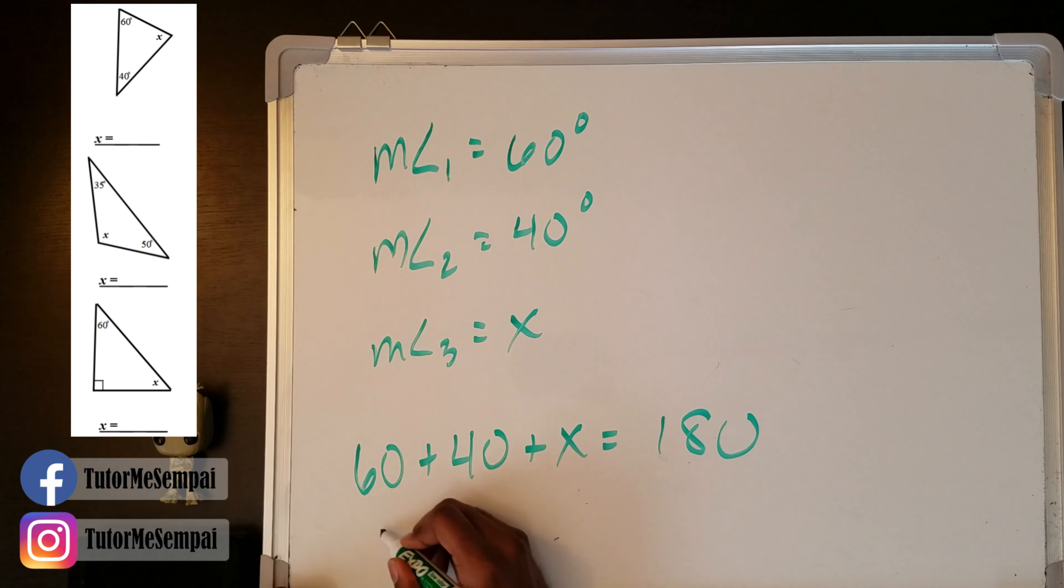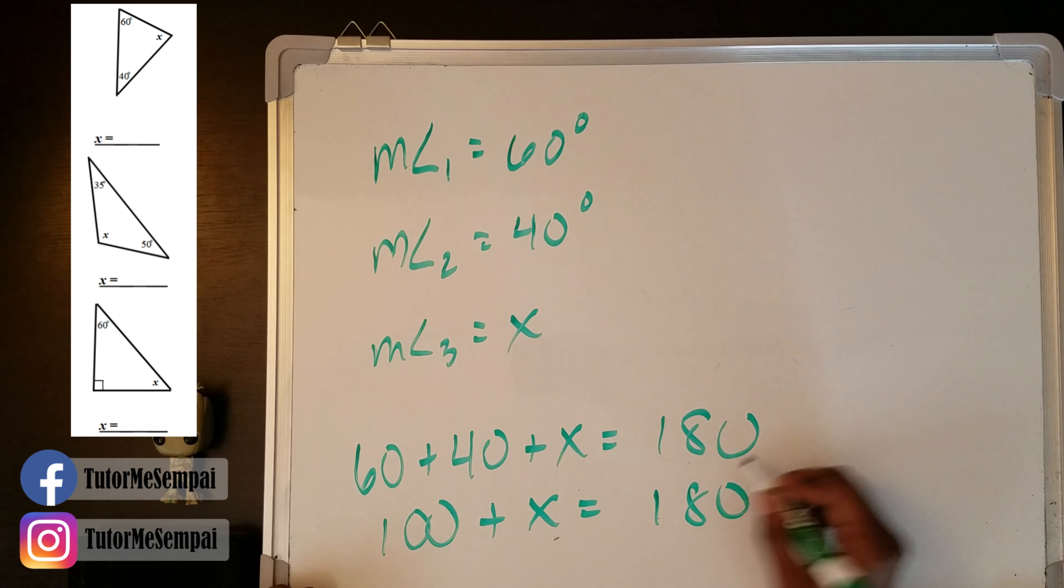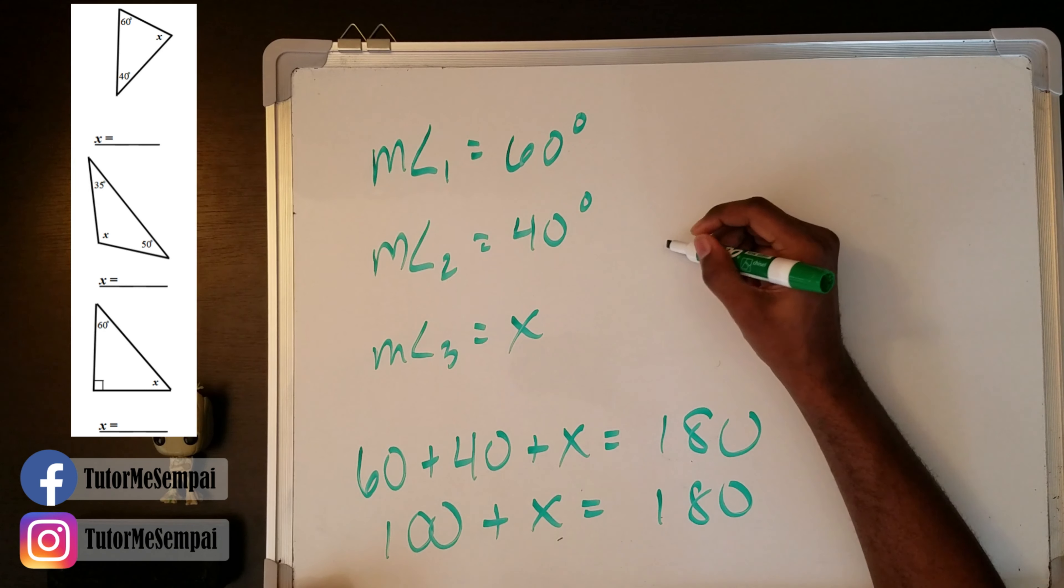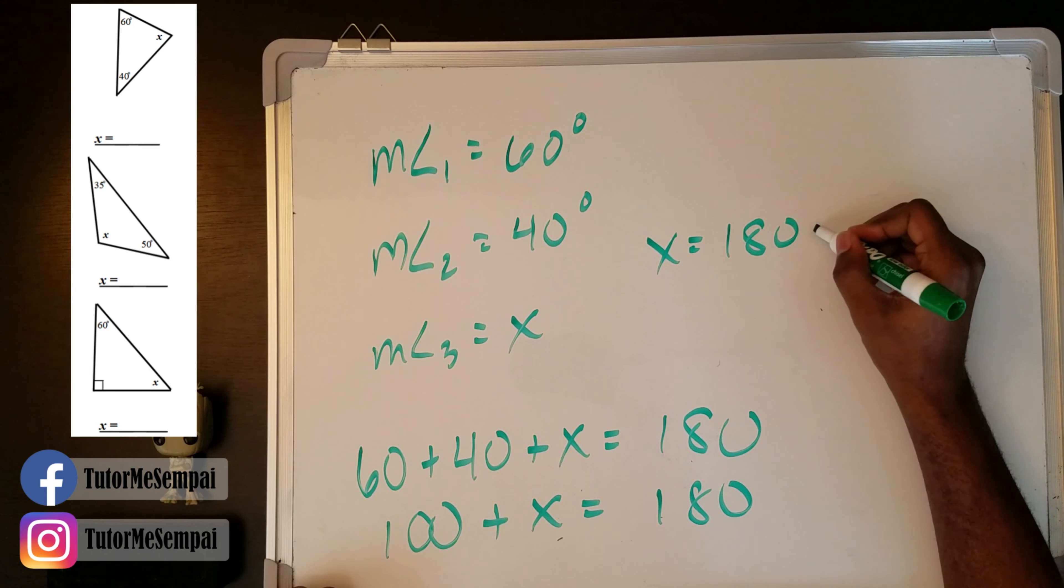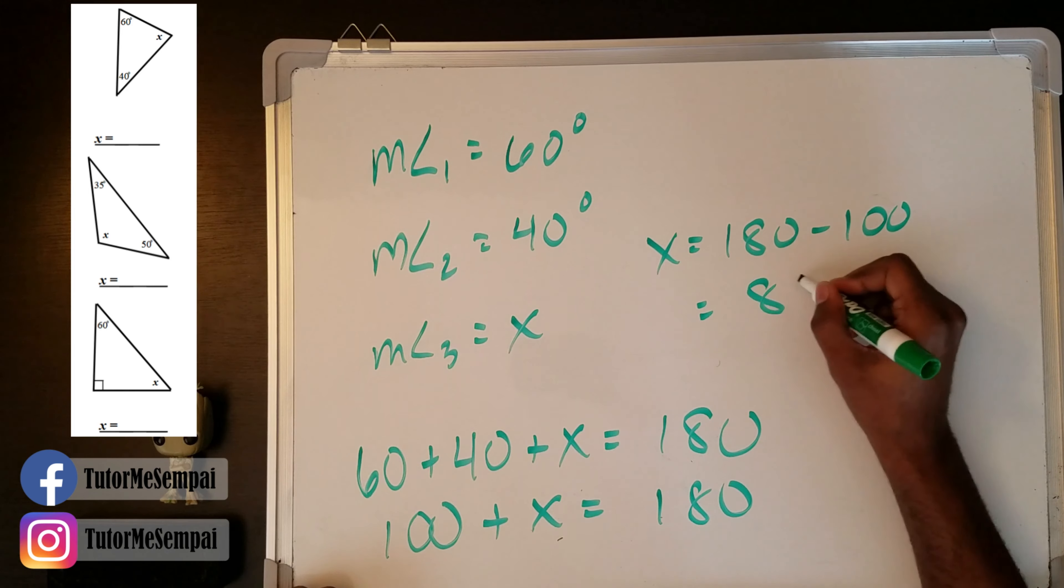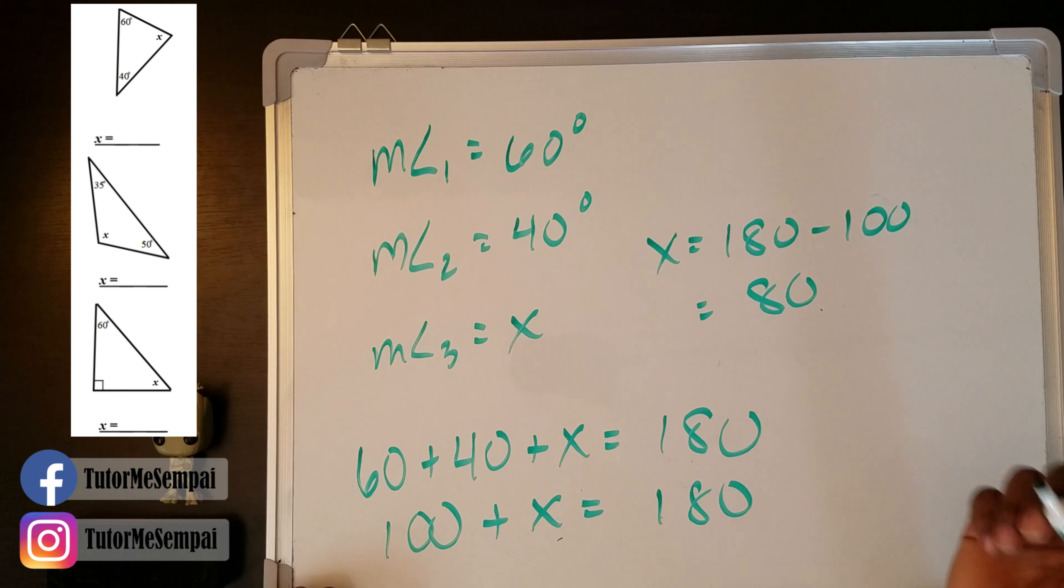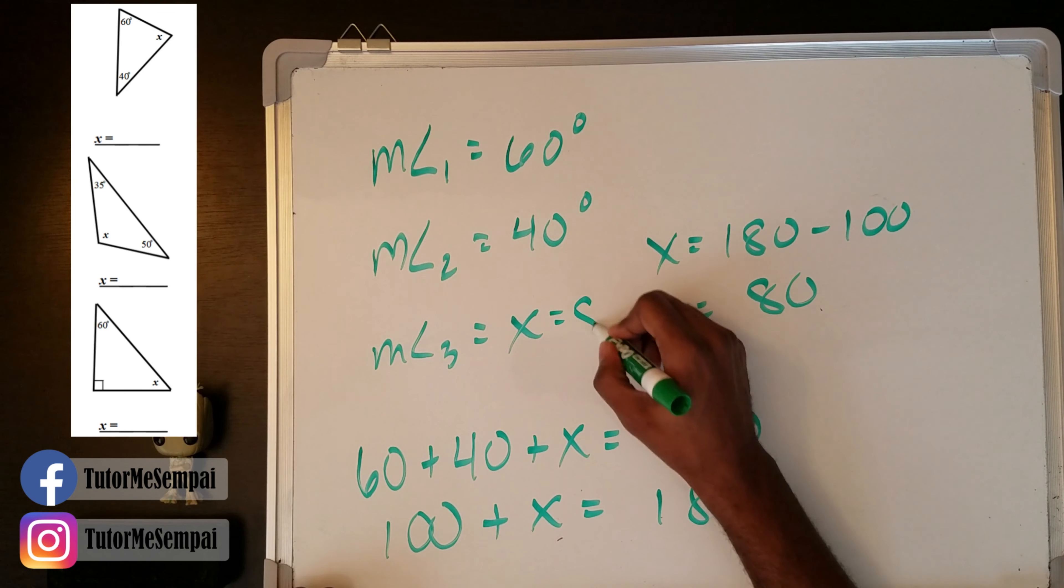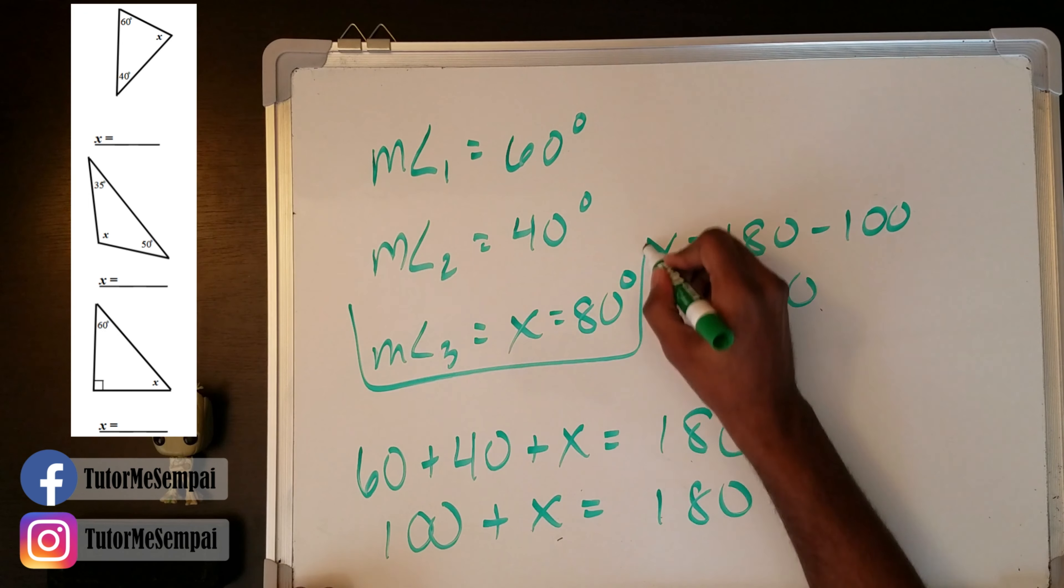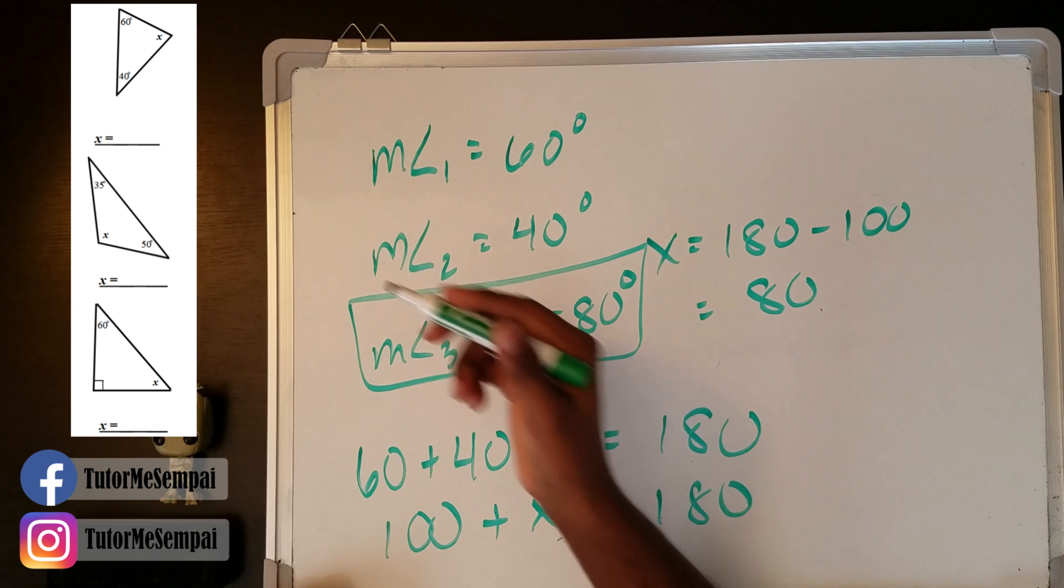So we add this up. So we have 100 plus X equals 180. And you can kind of figure out what this is from looking at it. But let's subtract 100 from both sides. So we get X equals 180 minus 100. So X has to be 80, 80 degrees. This last angle is 80 degrees. That is our answer for the first triangle.